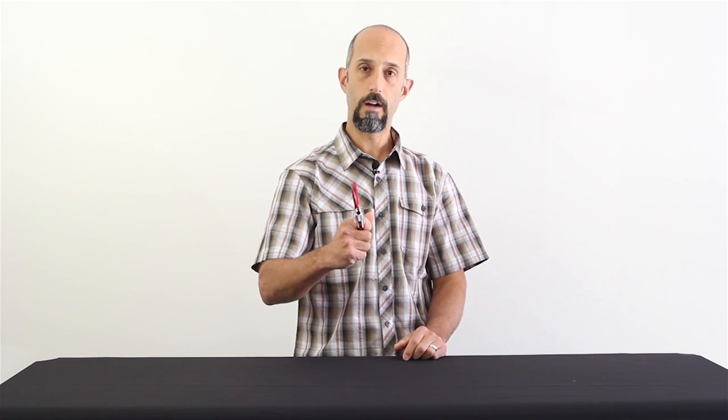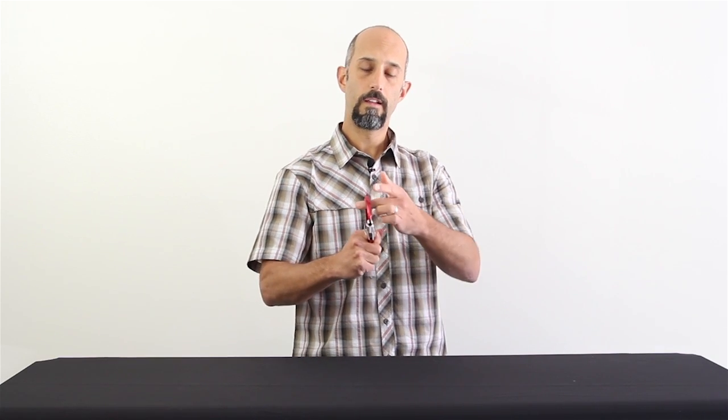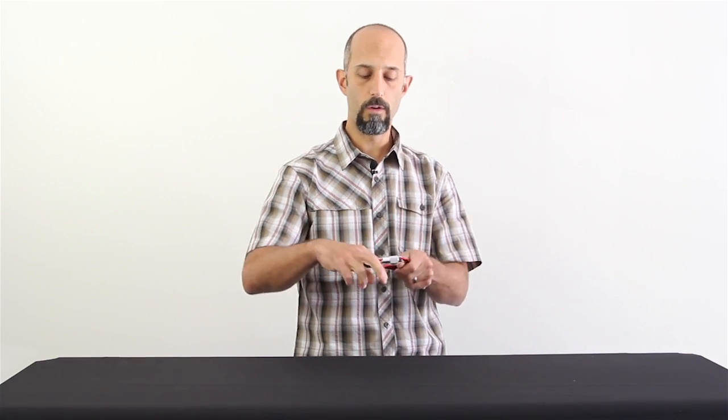Carabiners like this work great for belaying. Running your harness through the bottom here helps you keep the carabiner oriented in the way you want.